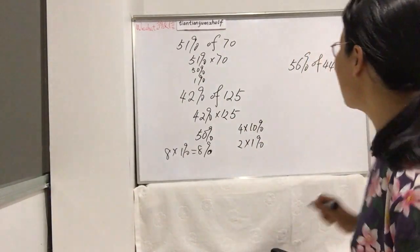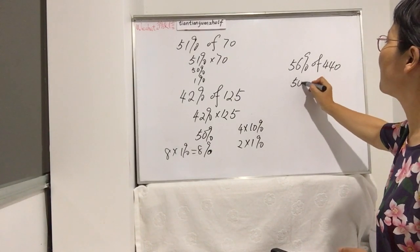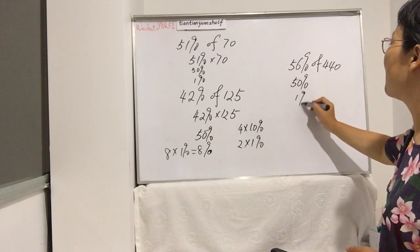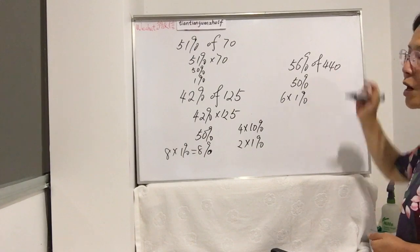Because 8% times 125 is a special number we talked about before—it's very easy to work out the answer. And the third one is 56%. You can think about 50% plus 1% times 6, and then you can work out the answer.